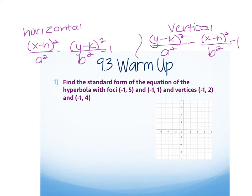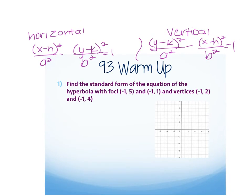The a is always on the first term in the equation. That's one of the differences between the hyperbola and the ellipse — for the ellipse the a is the bigger value, but for the hyperbola it's just the first one. The other difference is the minus sign in between.